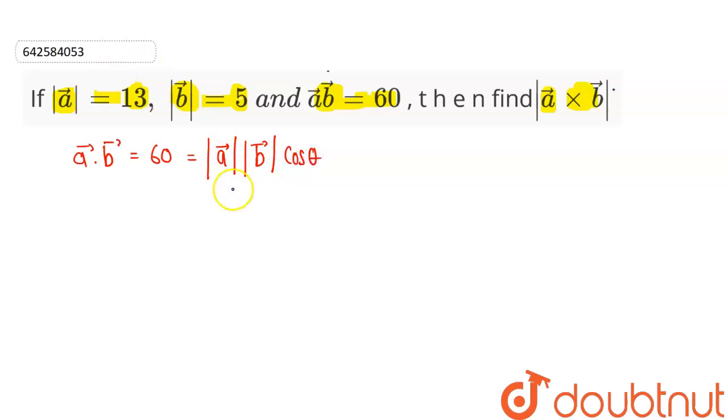So mod A vector is given as 13 and mod B vector is given as 5. So that means we can write this as 60 equal to 13 into 5 into cos theta. So cos theta comes out to be 60 divided by 13 into 5. So this will be 12 by 13.